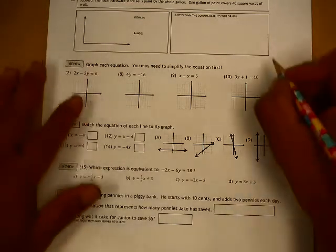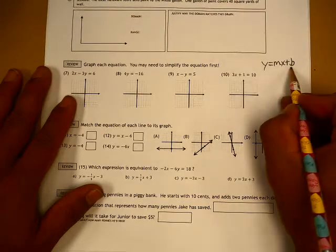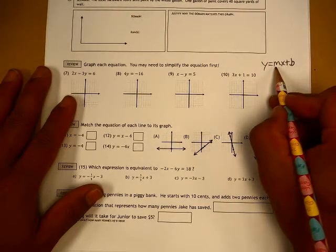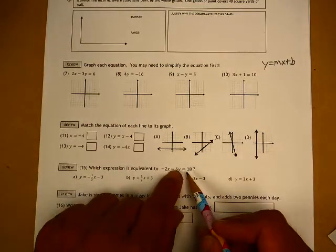My preference is to do y equals mx plus b. b is the start, m is the slope with the rise over the run. That will especially work for this one here.